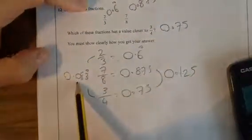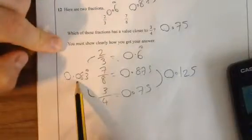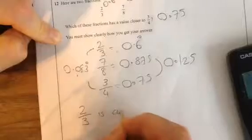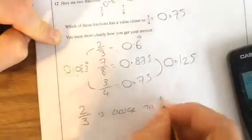Now, which one of these two numbers is closer? It's going to be that. So, I'm going to say that 2 thirds is closer to 3 quarters.